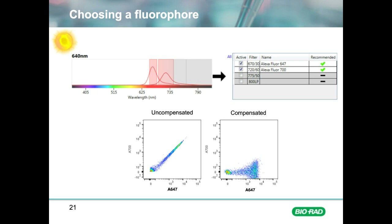This false signal can be seen in the dot plots. To manage the false signal, you need compensation — a subtraction of the false positive from the wrong detector — which is done using single-stained samples. However, compensation also leads to signal spreading, which can lead to reduced resolution with dim fluorophores. Therefore, it is good practice to separate your fluorophores across lasers and filters if possible.